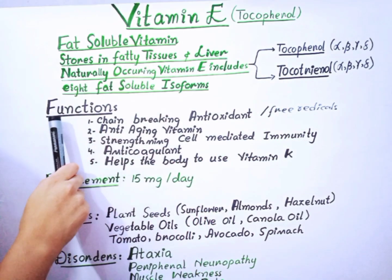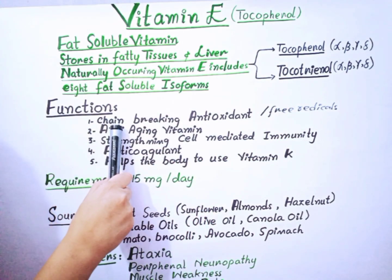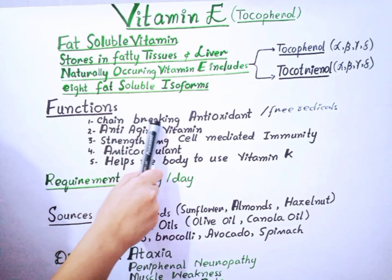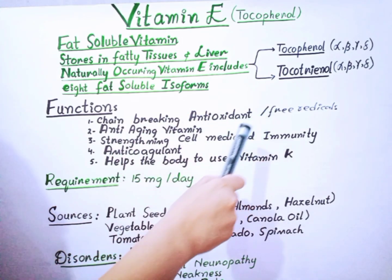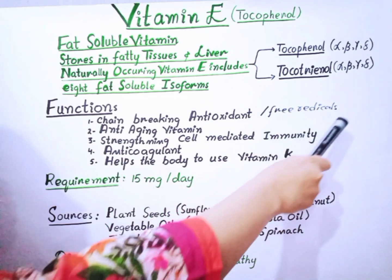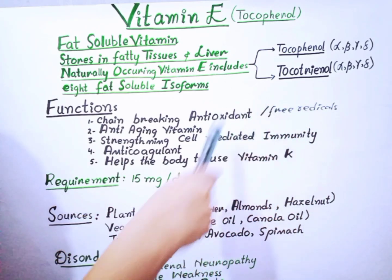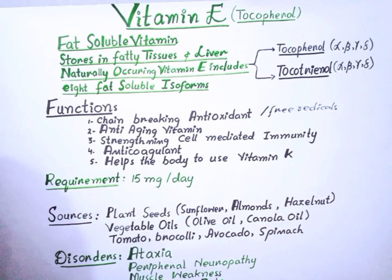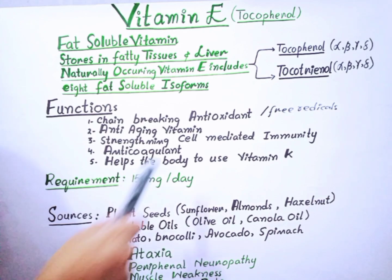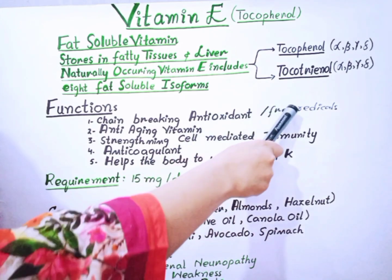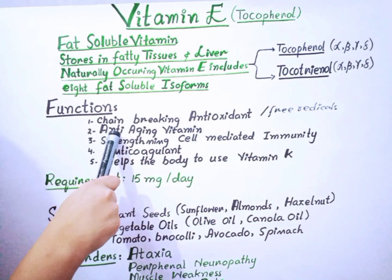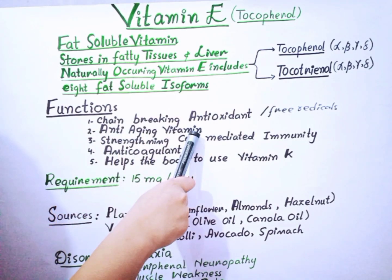The first function of Vitamin E is that it acts as a chain-breaking antioxidant — it prevents the propagation of free radicals. Free radicals are harmful compounds; if their level becomes too high in our body, they cause illness. These are unstable atoms that can damage our cells. Vitamin E acts as a potent antioxidant against these free radicals.